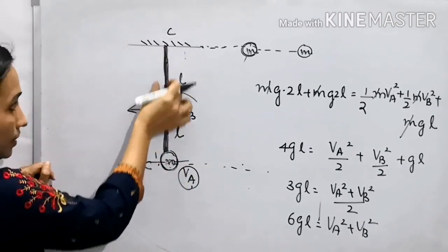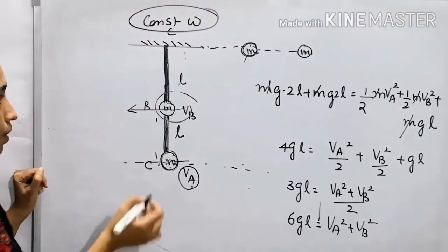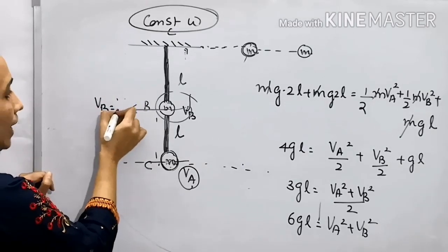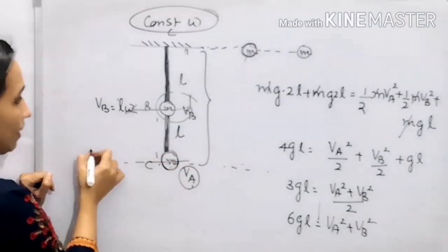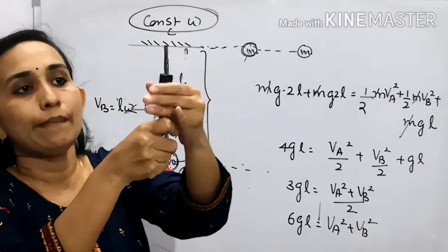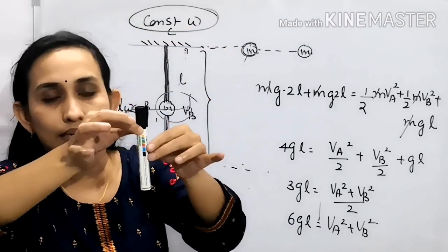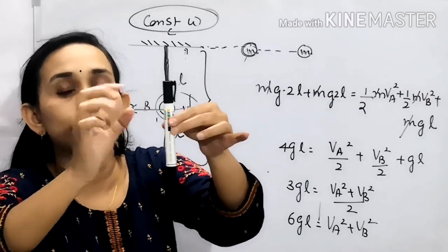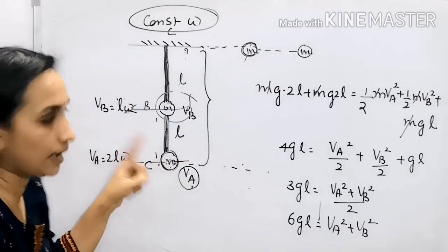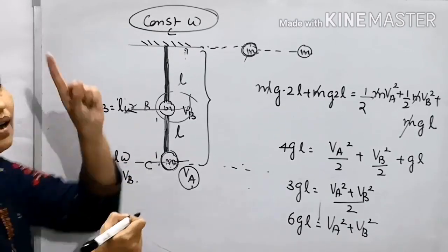Now this is a rod. This rod is rotating with constant omega. Because if it is a rod, every point on this rod is going to rotate with constant omega. But the linear velocity is always given by r omega, which is the radius of the circle. The radius for A is 2L and for B is L, so VA is 2VB. That is the key point.